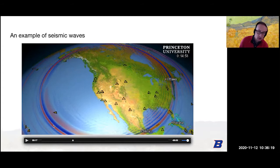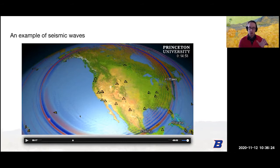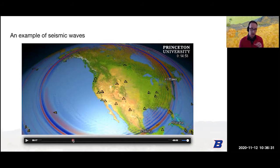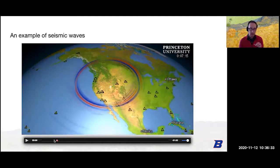Out in the ocean through the oceanic crust it's still nice and smooth. We try to use these changes in the wave field that we observe to say something about the 3D structure of the earth as well as the source.